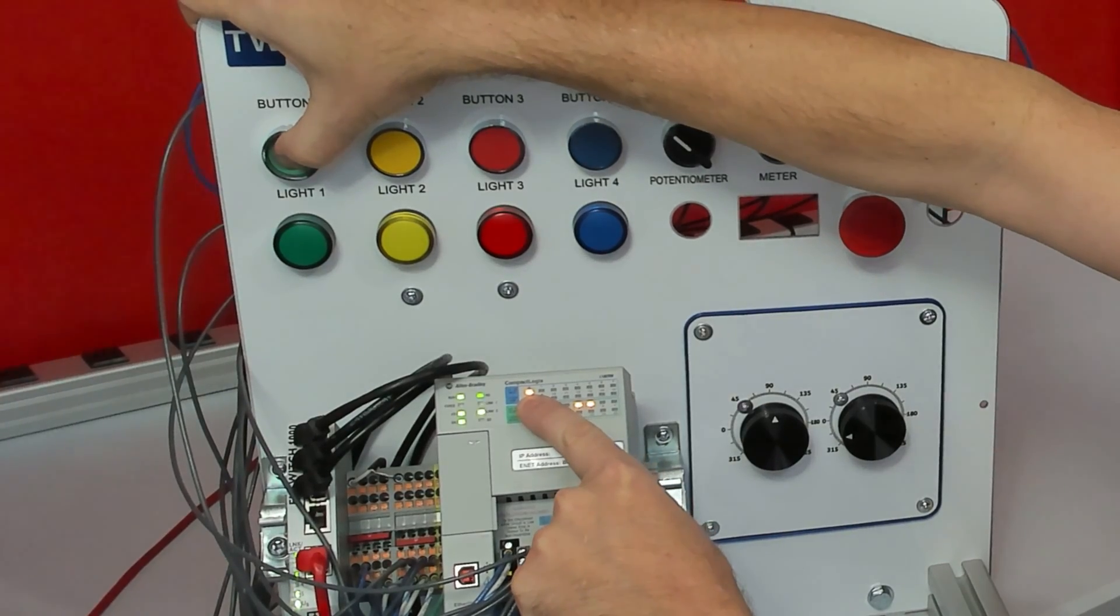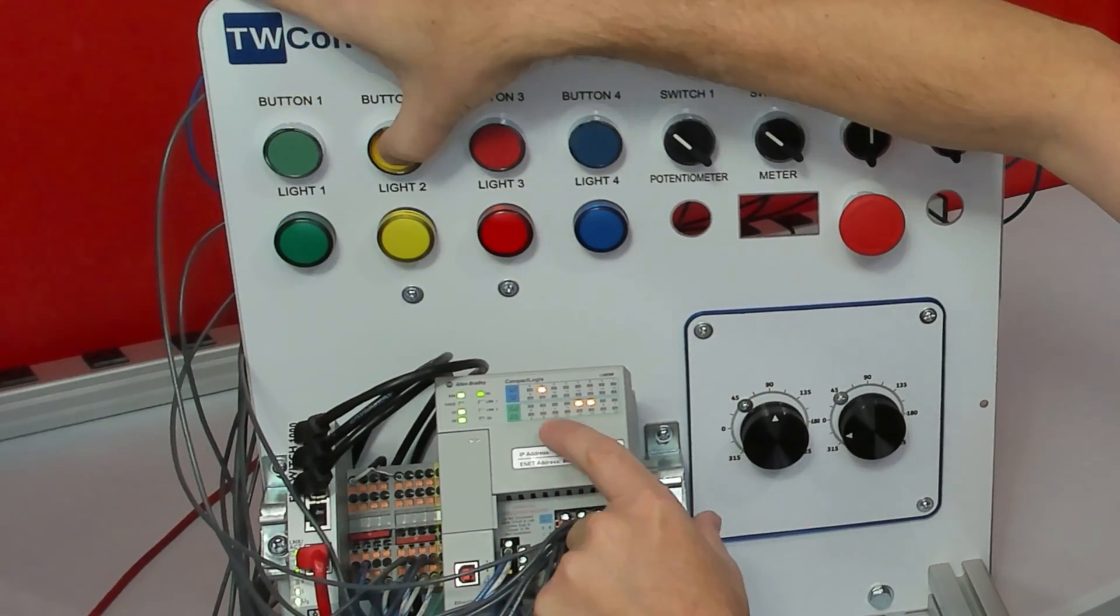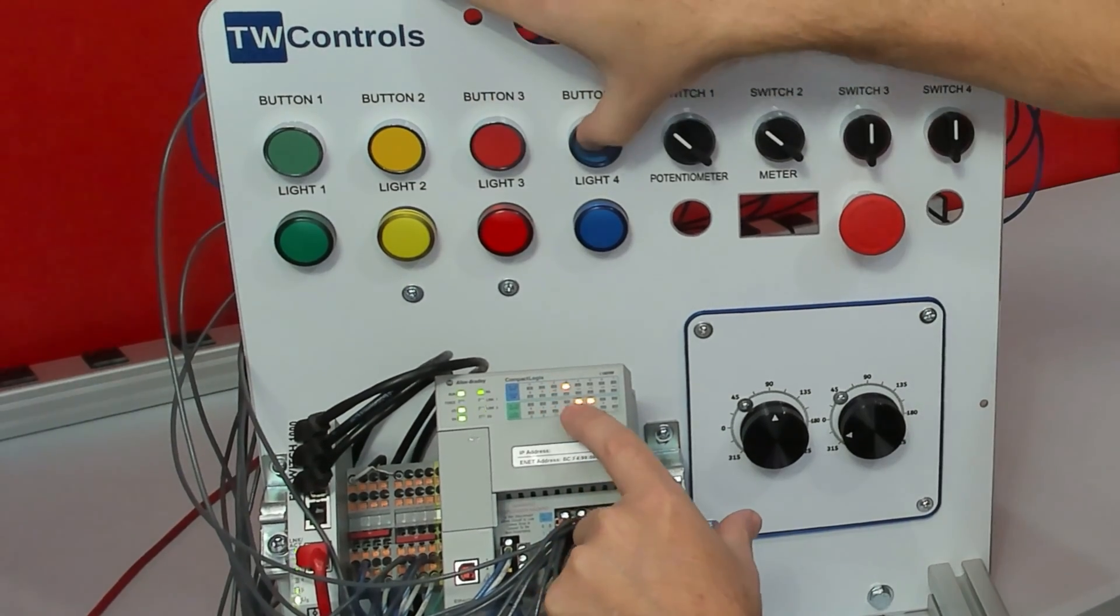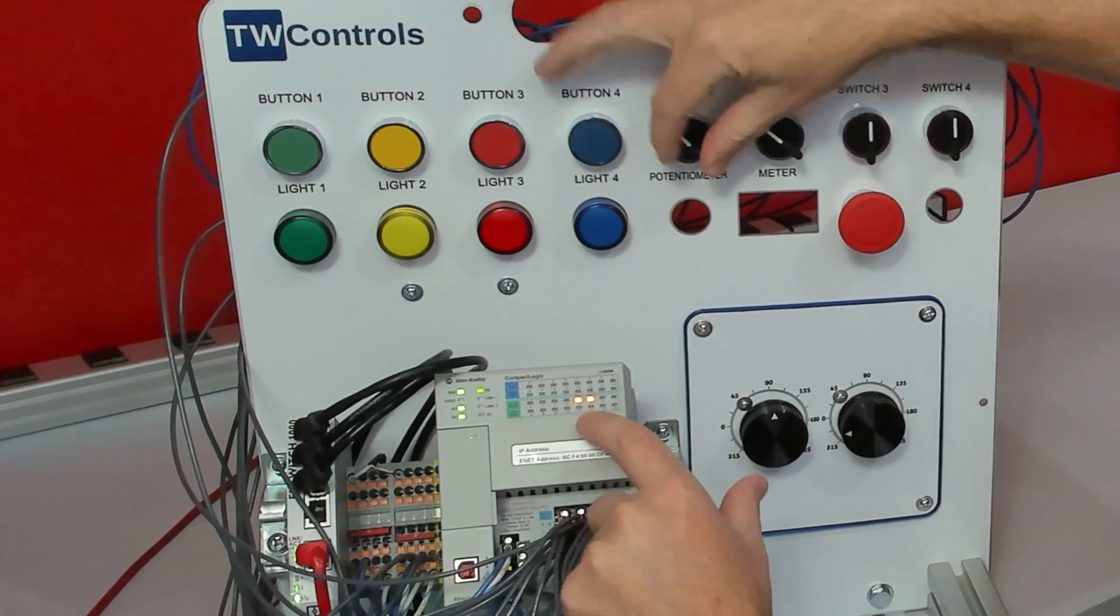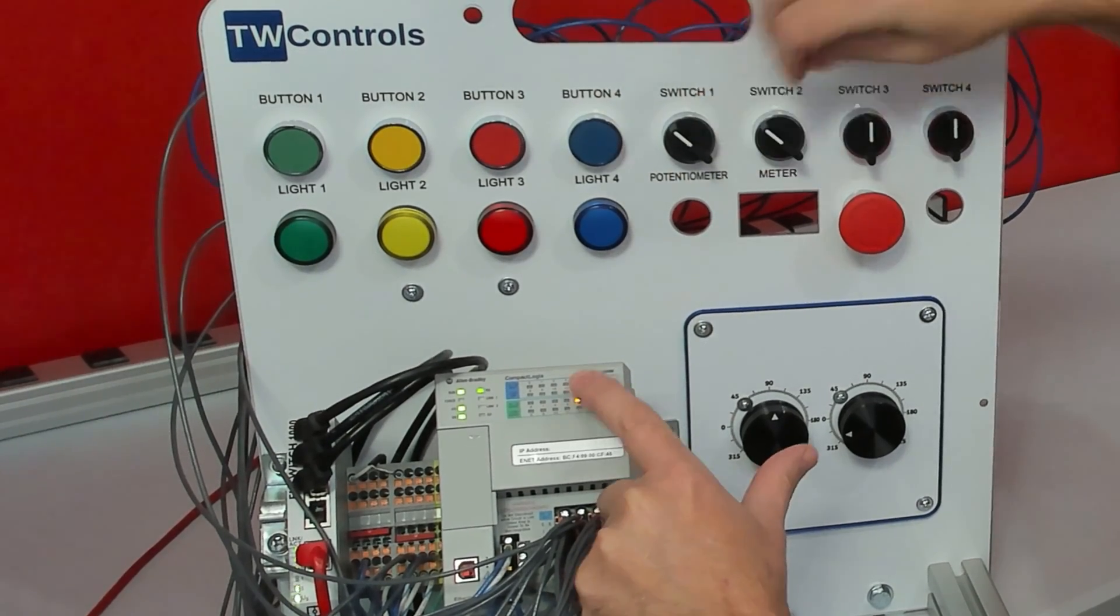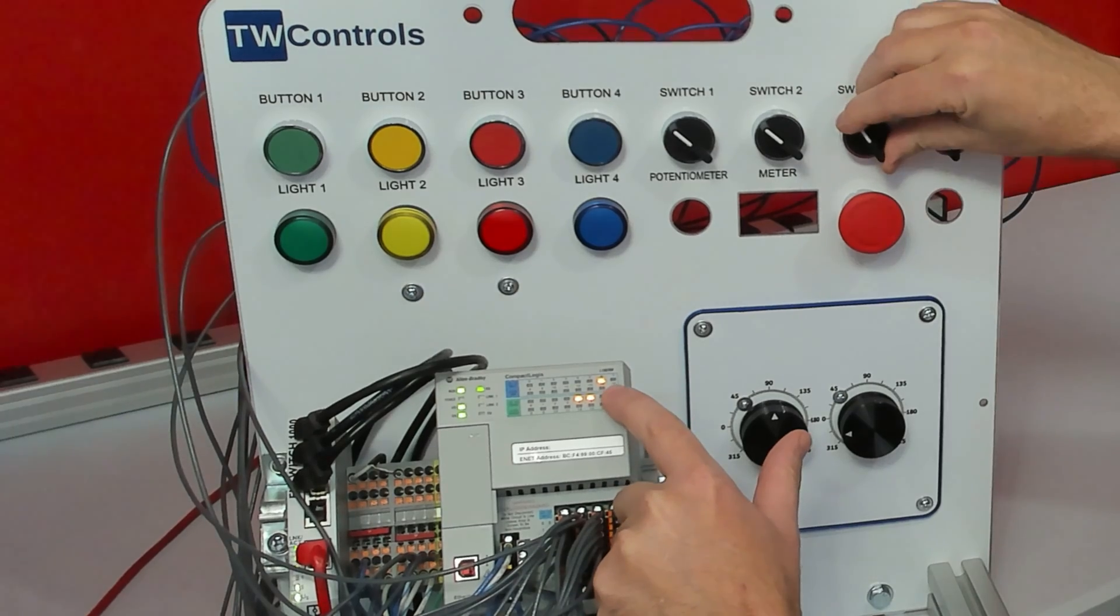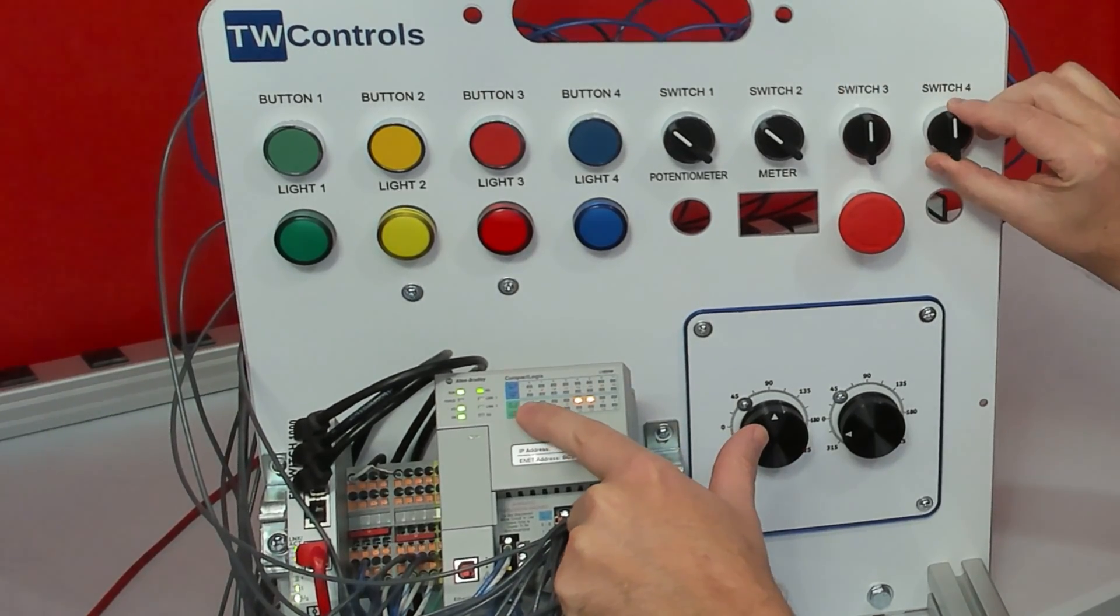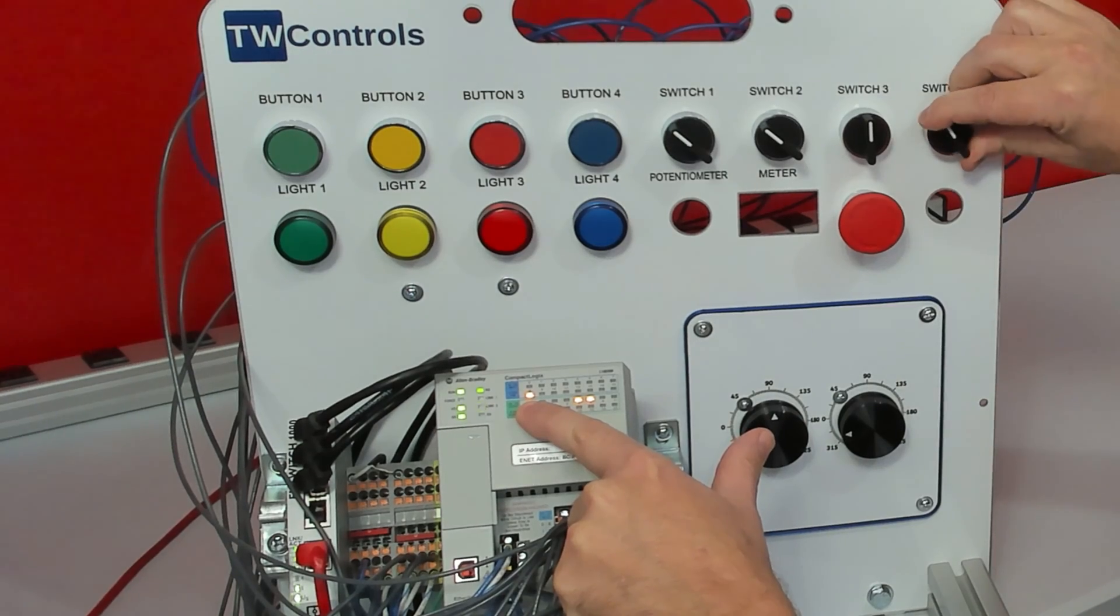Make sure when you press button one, input zero turns on. Button two is input one, button three is input two, button four is input three, switch one is input four, switch two is input five, switch three to the left will be input six, switch three to the right will be input seven, switch four to the left will be input eight, and switch four to the right will be input nine.